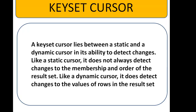A keyset cursor lies between a static and a dynamic cursor in its ability to detect changes. Like a static cursor, it does not always detect changes to the membership or the order of the result set. Like a dynamic cursor, it does detect changes to the values of the rows in the result set.